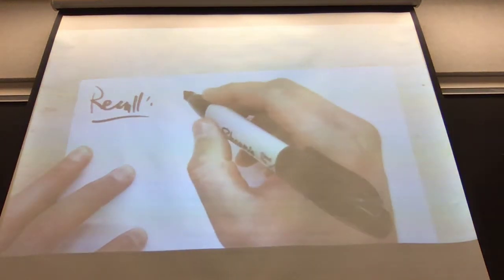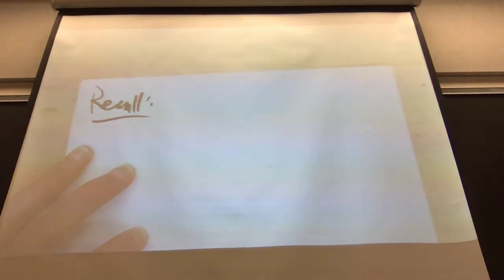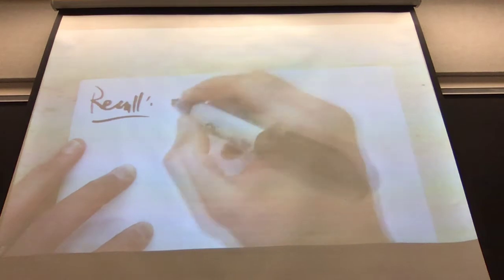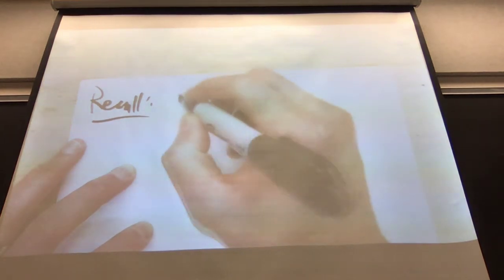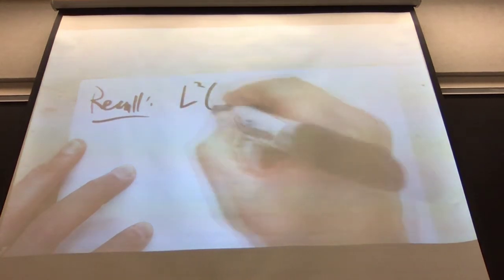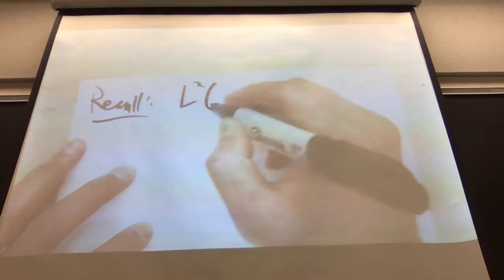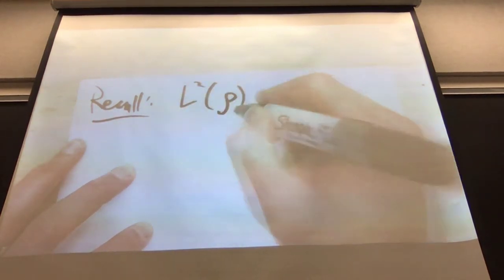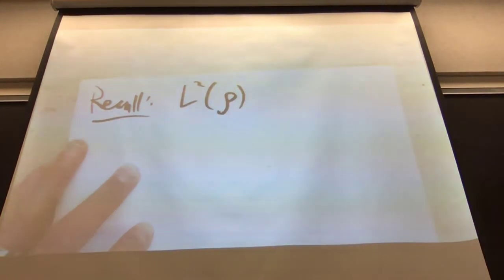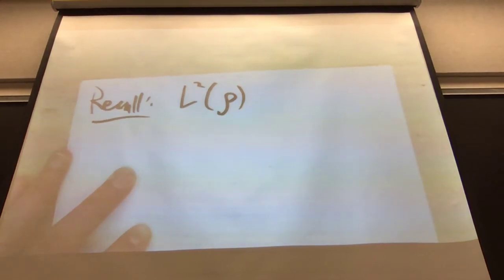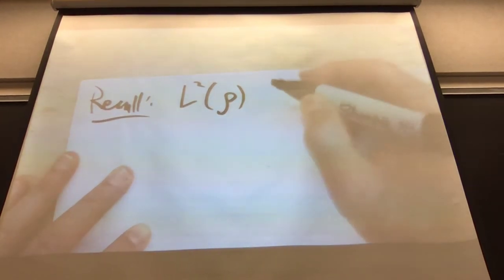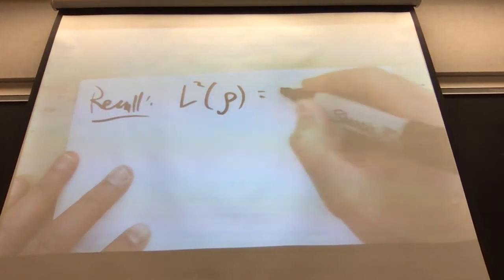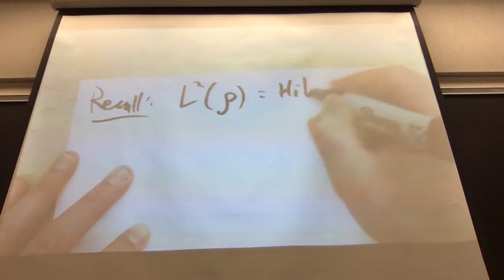We are trying to prove the Radon-Nikodym theorem; to do that, we want to prove the Riesz Representation Theorem. Let's just recall a couple of things. We were talking about Hilbert spaces. L2 of a measure — let's use rho for that measure, because we'll use rho again in a second — L2 of rho is a Hilbert space.